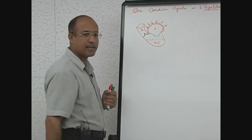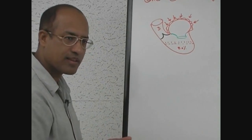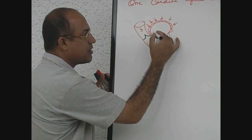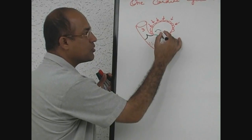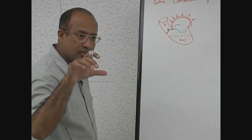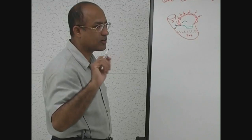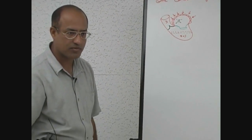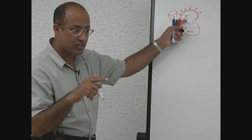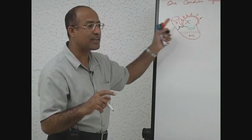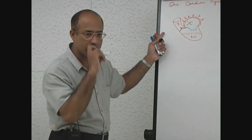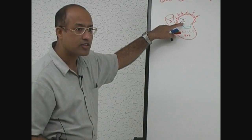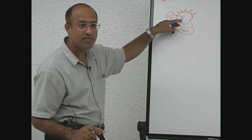When the left atrium contracts, naturally the pressure in the left atrium will go up. As soon as the left atrium contracts, the pressure slightly increases, and a pressure wave is produced due to increased pressure within the left atrium. This wave is called the A wave. It is a pressure wave produced in the left atrium due to atrial contraction.